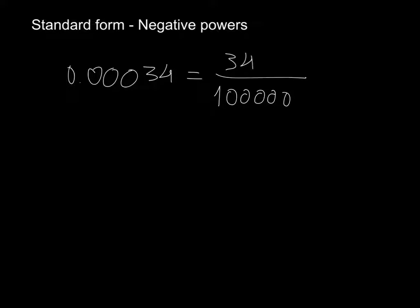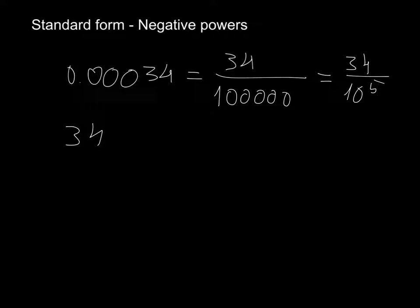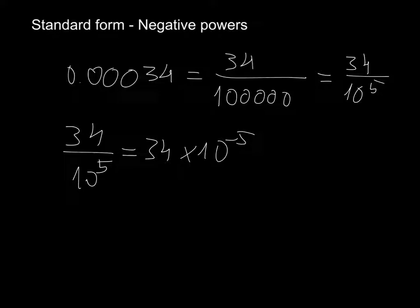Now of course we don't want to write that all the time, especially when you have like 9 zeros — it's really, really boring to count zeros. So we use standard form. And remember that this is the same as saying 34 divided by 10 to the 5. But we just learned before, when we were learning about negative powers, that 34 divided by 10 to the 5 is the same as saying 34 times 10 to the minus 5, because 10 to the minus 5 just means 1 divided by 10 to the 5 — it's exactly the same thing. There is no difference whatsoever.